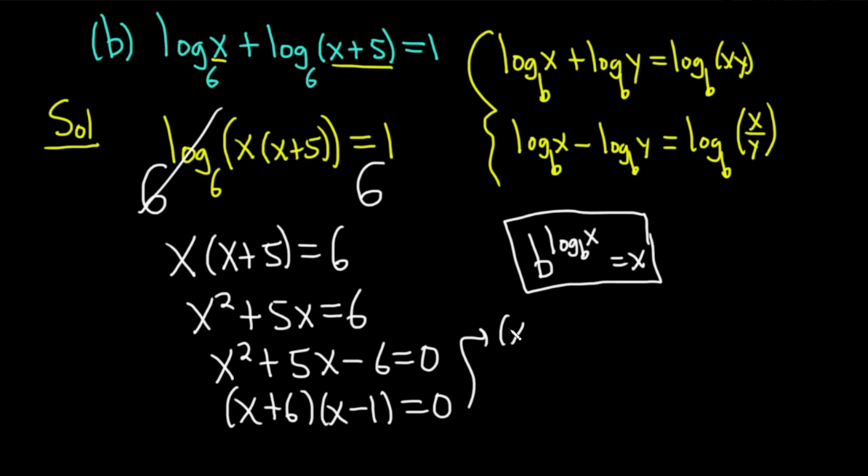You set each factor equal to 0. So x plus 6 is 0, or x minus 1 is 0. Subtracting 6 from the first equation gives us negative 6. Adding 1 gives us 1 here from the second equation.